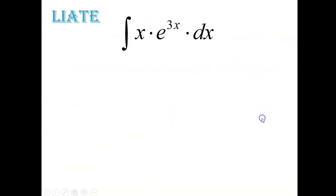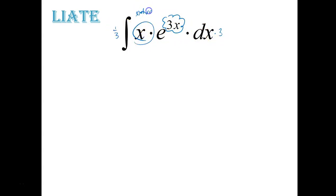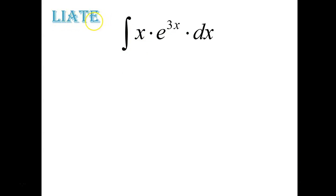Ready to do one? Let's go. We look at this integral and we see a product. The first thing we want to try is u-sub. If I use e to the 3x and call that my cloud, then I need a 3 for my d-cloud, which is fine. But I've got this extra x sitting here, and that's no good — this is not a u-sub. So as soon as you see an extra x hanging around, that is screaming for integration by parts. Let's go over to LIATE and see what's going on.